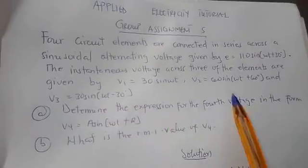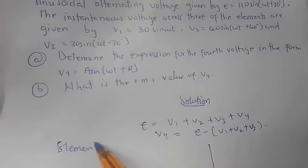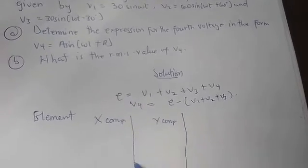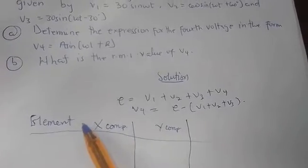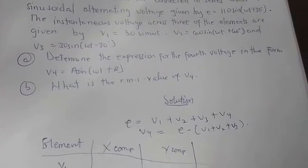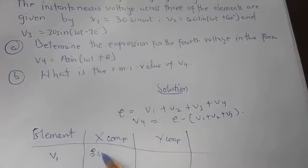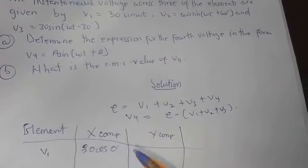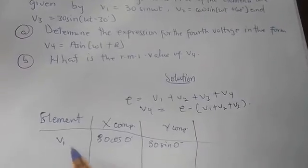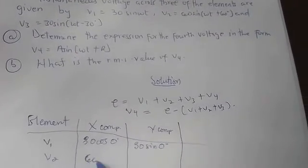We express all elements into their X component and Y component. For V1 = 30 sin(ωt) with phase angle zero: X component is 30 cos(0°) and Y component is 30 sin(0°). For V2 with amplitude 60 and phase angle 60°: X component is 60 cos(60°) and Y component is 60 sin(60°).